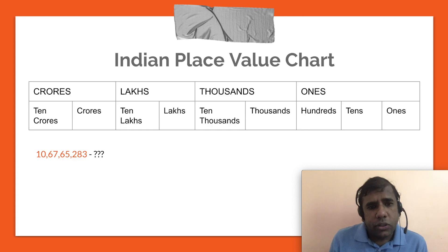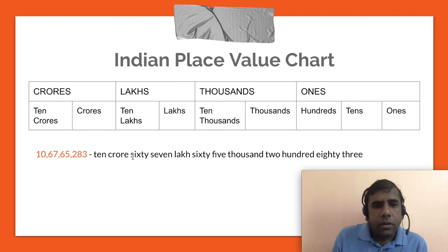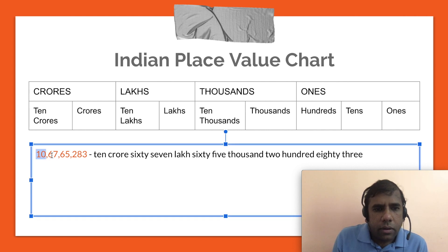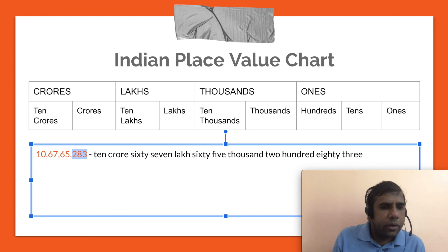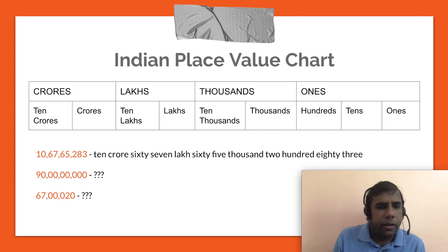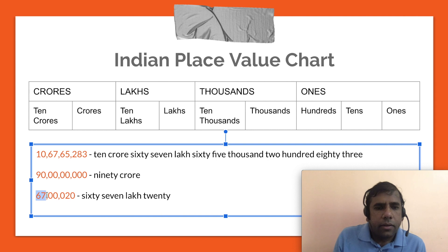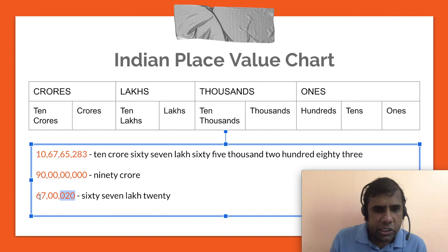Let's look at another example: the number 10,67,65,283. This number is read as 10 crore 67 lakh 65 thousand 283. For another number with 90 followed by zeros, placing the commas tells you it is 90 crore. And for 67 followed by 20, with three zeros in between, you read it as 67 lakh 20 — we don't say 'zero thousands'; it simply becomes 67 lakh 20.